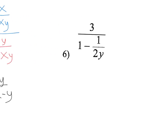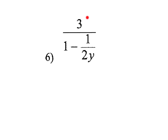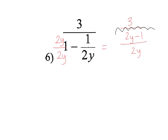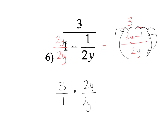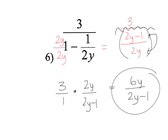And the next one is another complex fraction. I don't need to get a common denominator in the numerator because it's just 3. But my common denominator in the denominator is going to be 2y, so I multiply by 2y over 2y. Now I have 3 over 2y minus 1 divided by 2y. I multiply by the reciprocal, which gives 3 over 1 times 2y over 2y minus 1, turning into 6y over 2y minus 1 as my answer. I can't reduce these because this is a sum or difference, not a product.